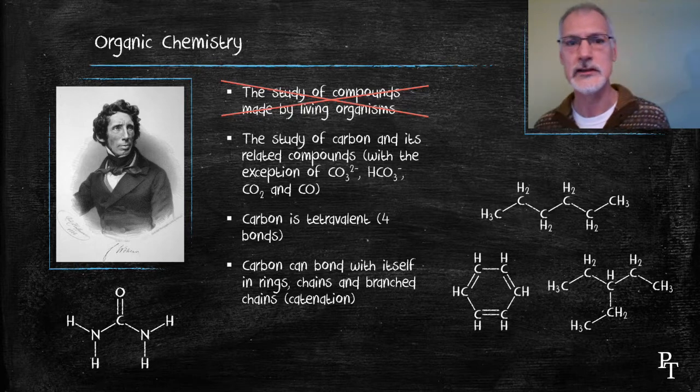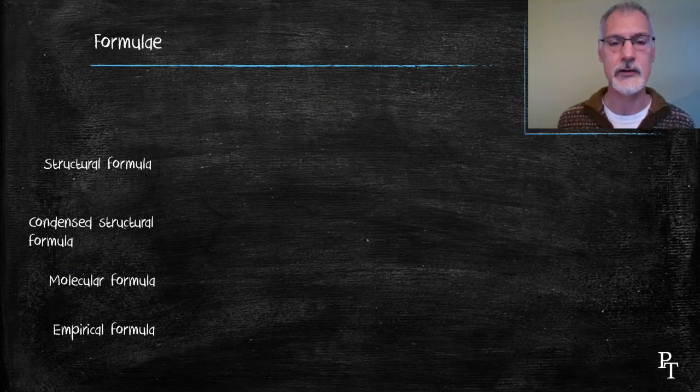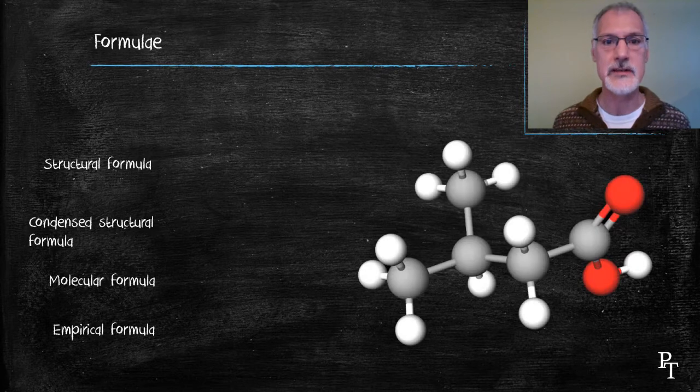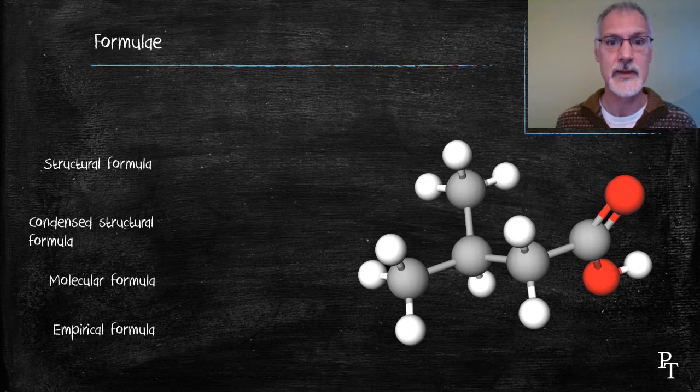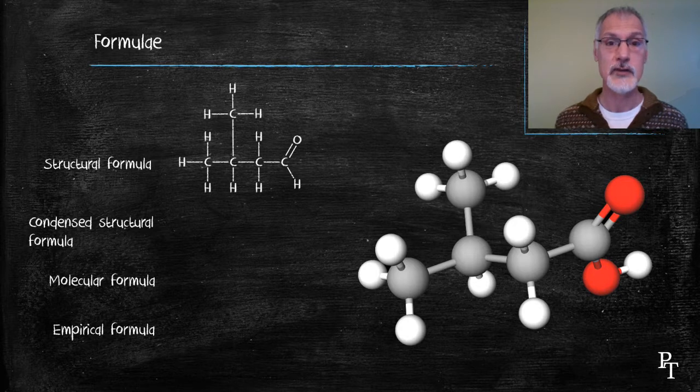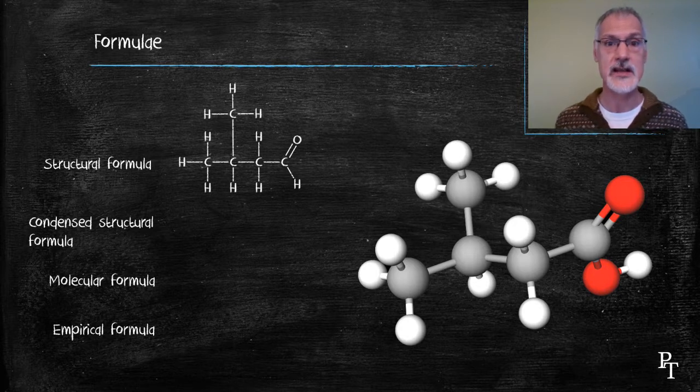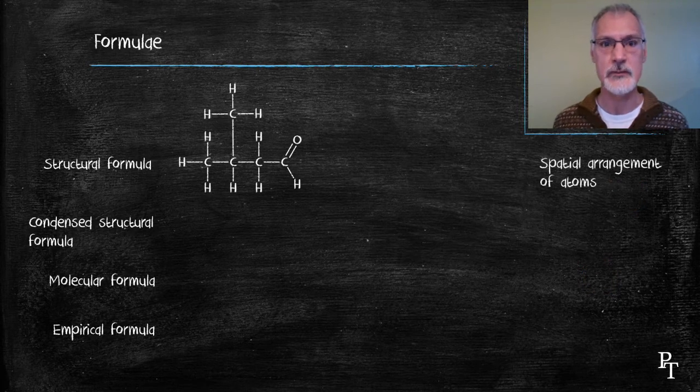I want to take briefly a look at how we depict or draw some of these organic chemicals. So here we have a 3D model of an organic chemical. The first thing I want to do is try to flatten that out and represent it in two dimensions. So here I have an example of what's called its structural formula.